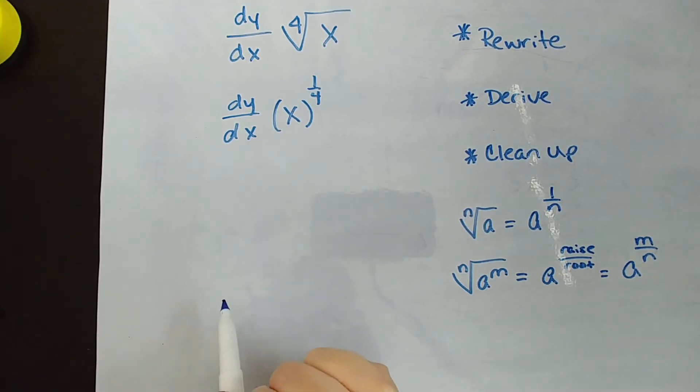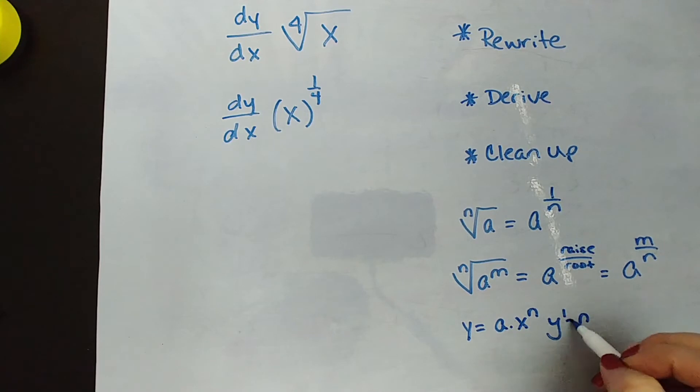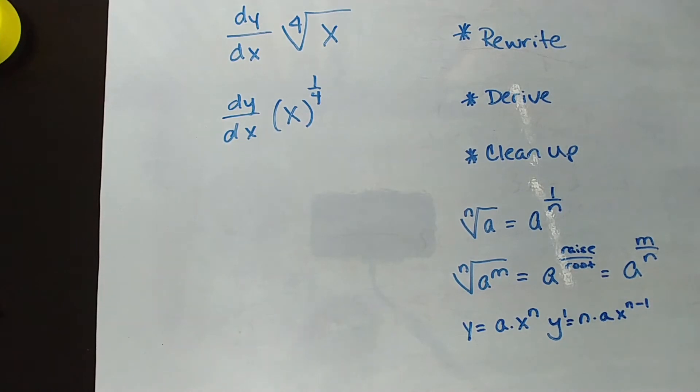Now we can just use the power rule. Power rule is our friend because it's the easiest rule. The power rule, in case we don't forget it, says that if we have y equals a times x to the nth power, then the derivative is simply take down that power, multiply it by anything there, and then lower the power by one. That's our favorite rule because it's the easiest.